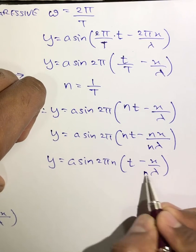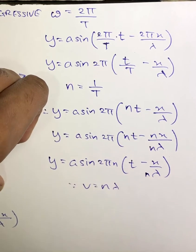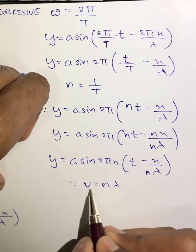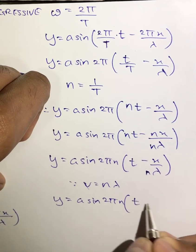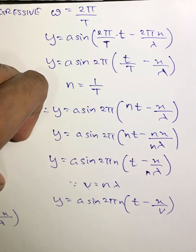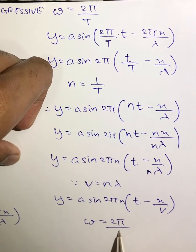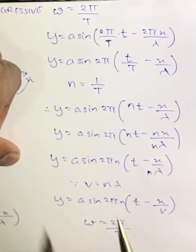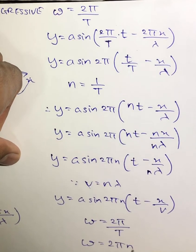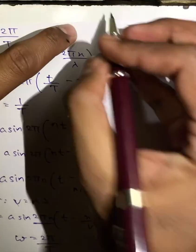We can further simplify this equation. The formula for the velocity of a wave is v = nλ, so instead of nλ we write v. Therefore y = a sin 2πn(t - x/v). Also, since ω = 2πn, we can substitute 2πn with ω to get y = a sin(ωt - x/v).